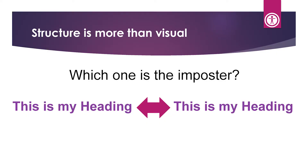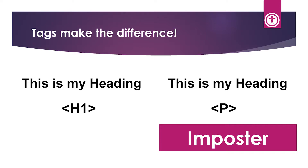Let's look at an example. On screen I have two versions of 'This is my heading.' They look virtually identical to a sighted person, but if we look at the underlying code, the item on the left is properly tagged as a Heading 1 and the item on the right is improperly tagged just as a paragraph. This is a simple way to show that tagging makes a real difference.